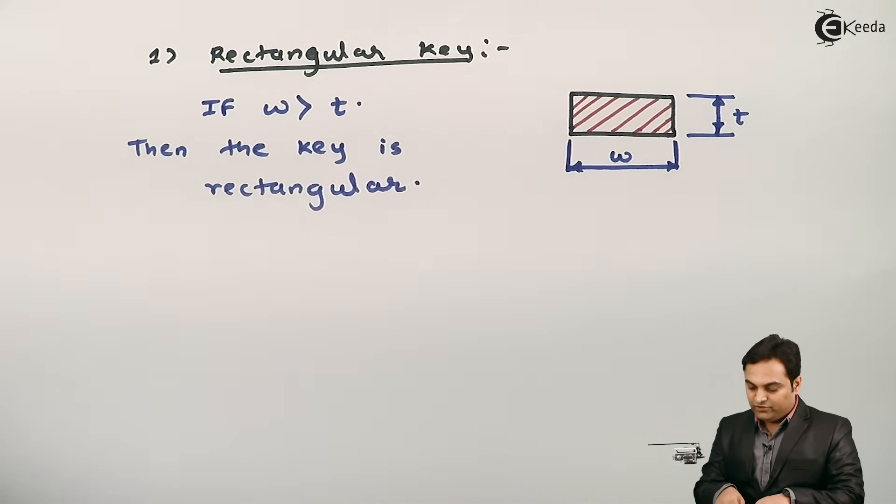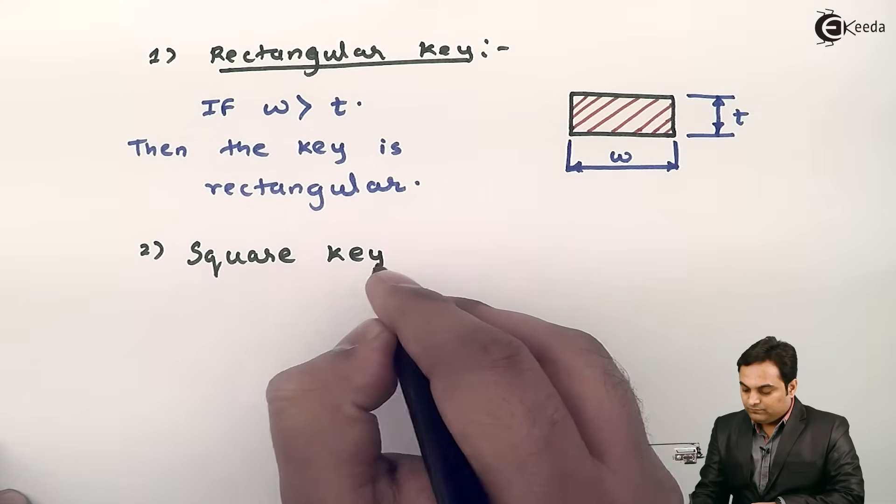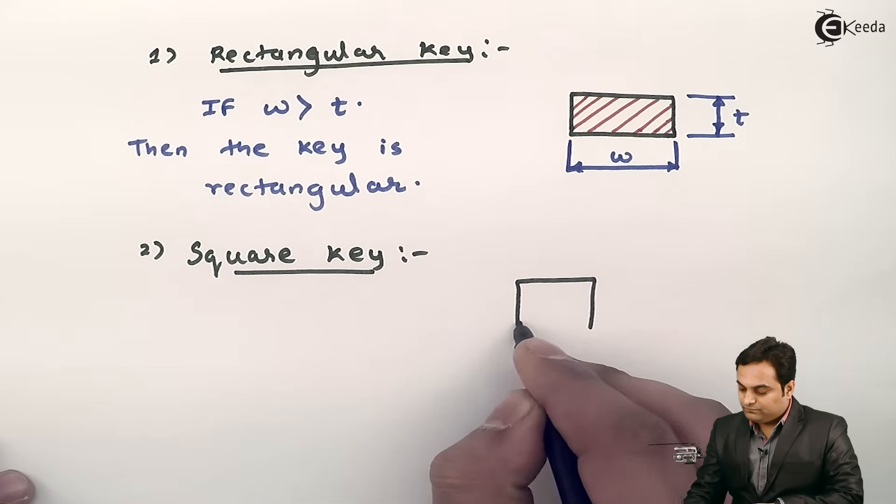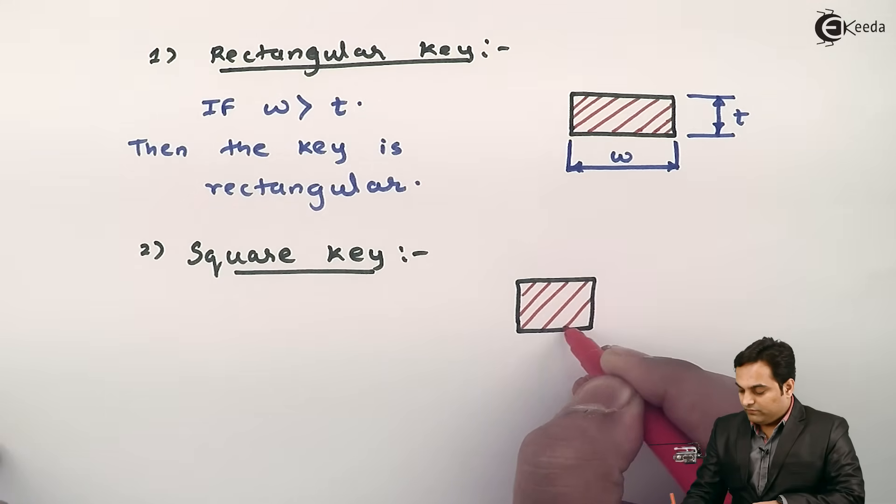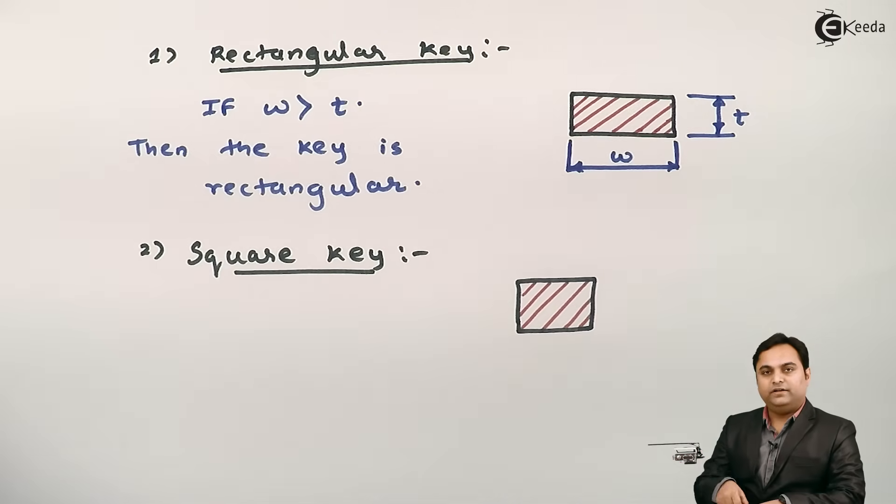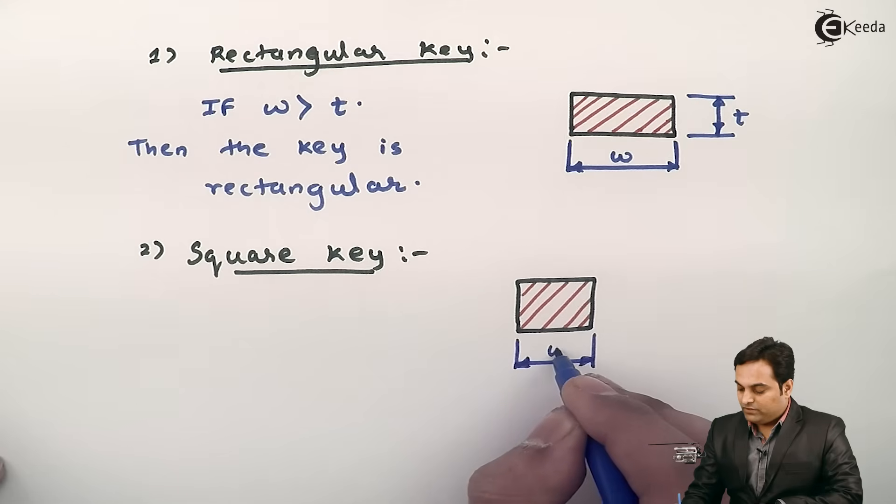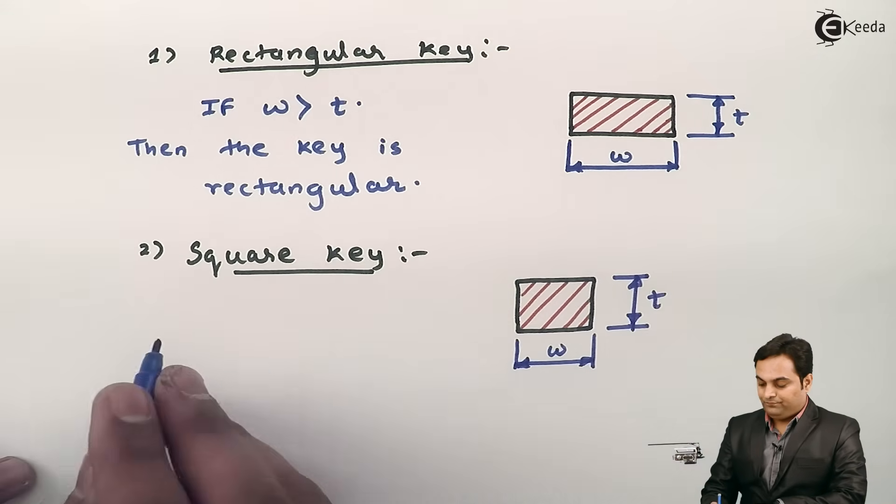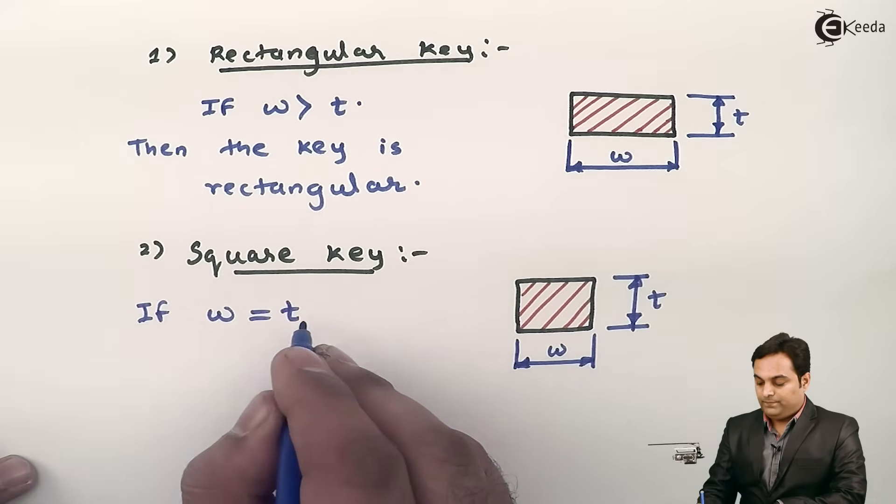After that we have square key. As from the name itself, in square key we have width and thickness same. Here we have width and here we have thickness. So if width of the key is equal to the thickness of the key, then the key is a square key.